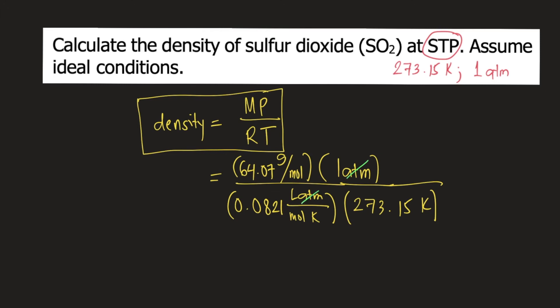Atm will cancel, moles will cancel, and Kelvin will cancel. So the unit for density is grams per liter.